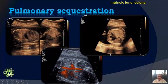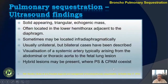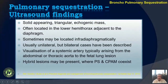We can have a large extralobar sequestration with blood flow coming from the aorta. Very often they are located close to the diaphragm and could be infradiaphragmatic also. Most of the time they are unilateral, though they could be bilateral. The blood flow assessment is very important. Very often what we have are hybrid lesions where we have a component of sequestration and CPAM coming together.